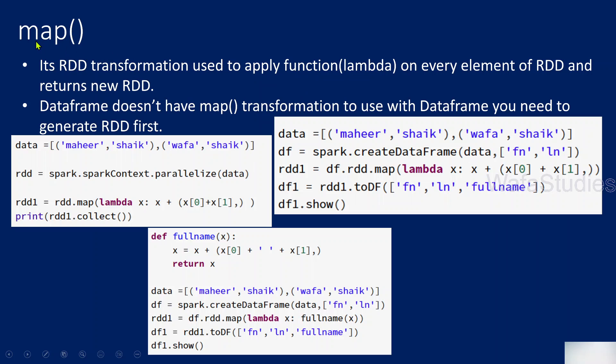There is something called the map function that will help you to perform transformations on RDD objects. In our previous video, we discussed what an RDD is and also how to convert an RDD into a data frame. Please watch that video before this one, because it is a prerequisite. If you don't watch it, you will not get this. I strongly encourage you to watch that first.